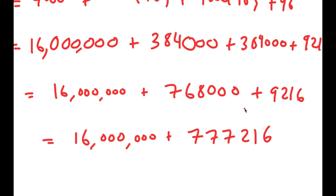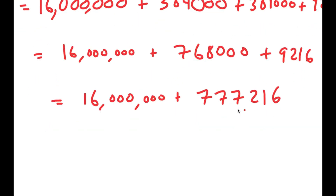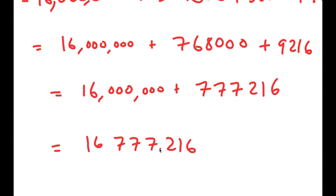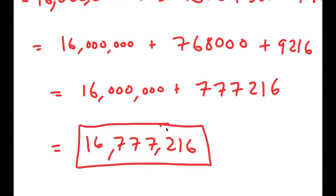For the final step I just add 777,216 to 16,000,000, so I get 16,777,216. This is my answer to the problem 2 to the power of 25 minus 2 to the power of 24.